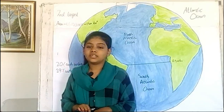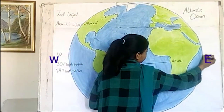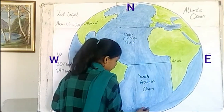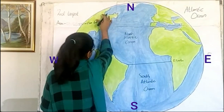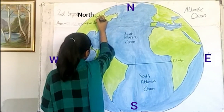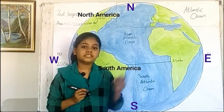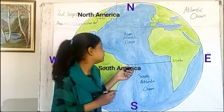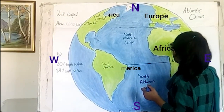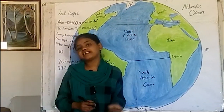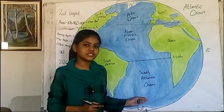The Atlantic Ocean lies between North and South America on the west, and Europe and Africa on the east. Up north, the Atlantic is connected to the Arctic Ocean, and the Southern Ocean is to the south.